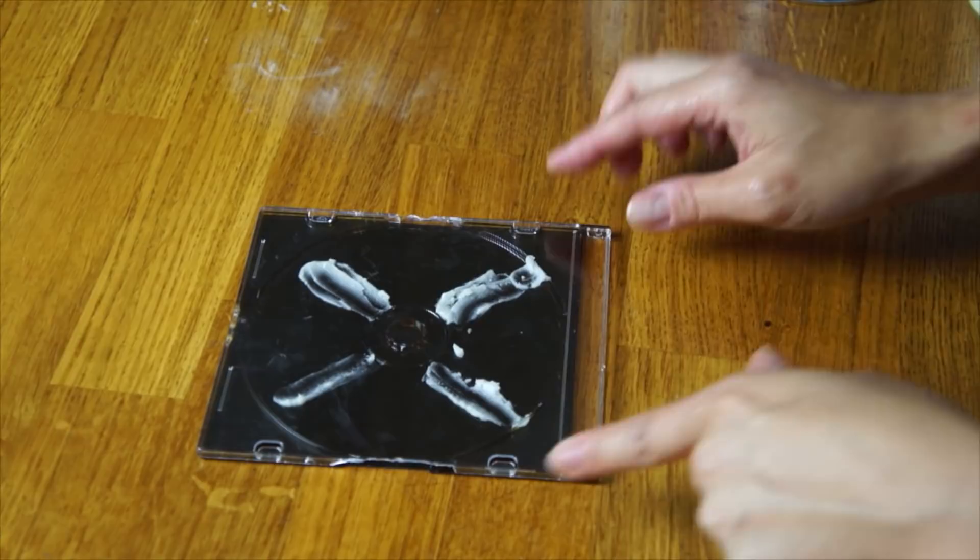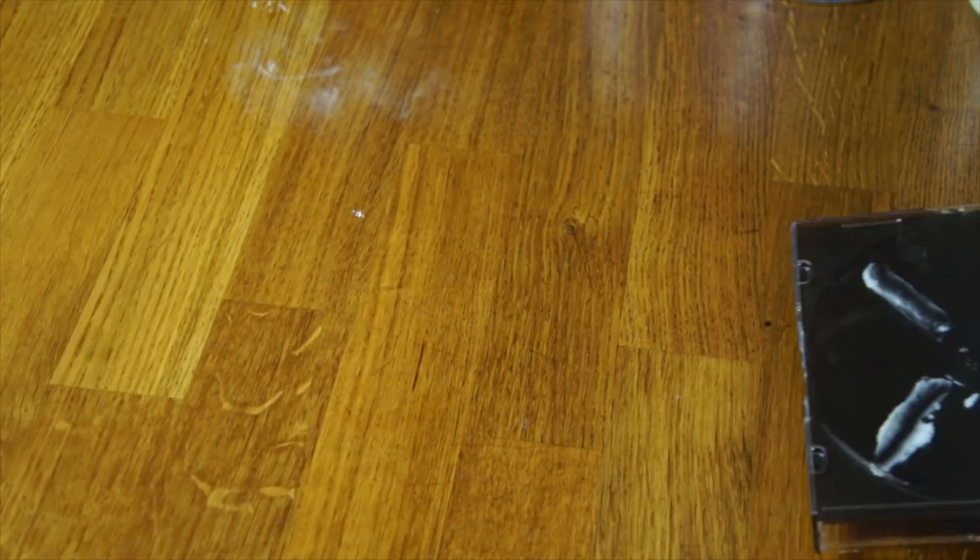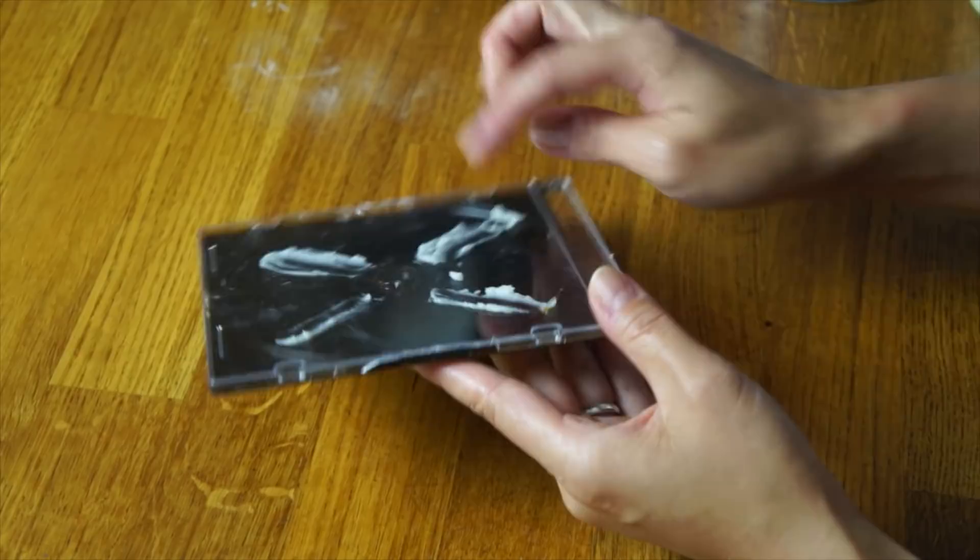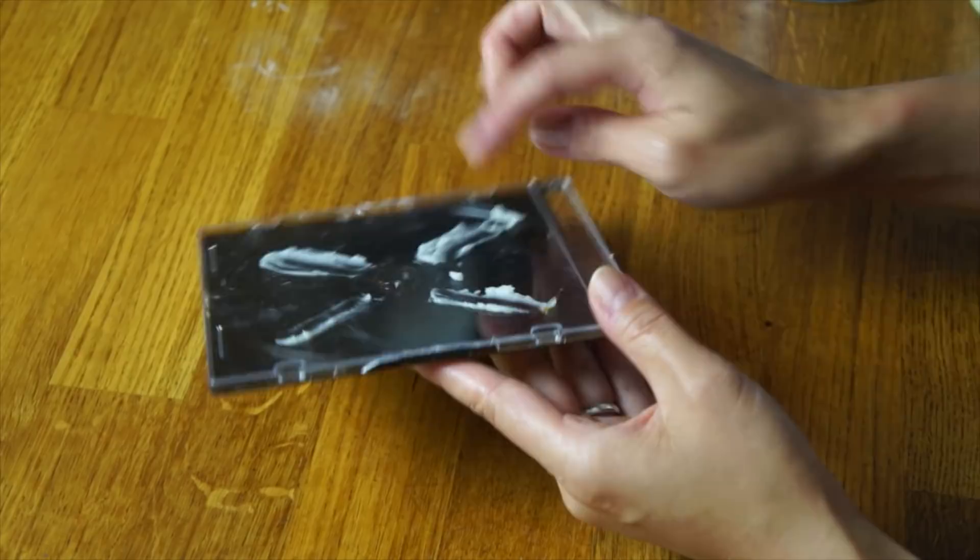Small hive beetles like dark areas. We're going to slide this into the bottom of the hive on the bottom board in the back. They'll crawl into there, eat the bait, and then just die inside of here. That's what I've read at least. That's it!